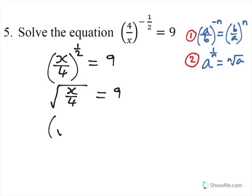Now, if we square both sides, we get the square root of x over 4, all squared, equals to 9 squared, which is 81. Now, the left-hand side becomes x over 4, equals to 81.